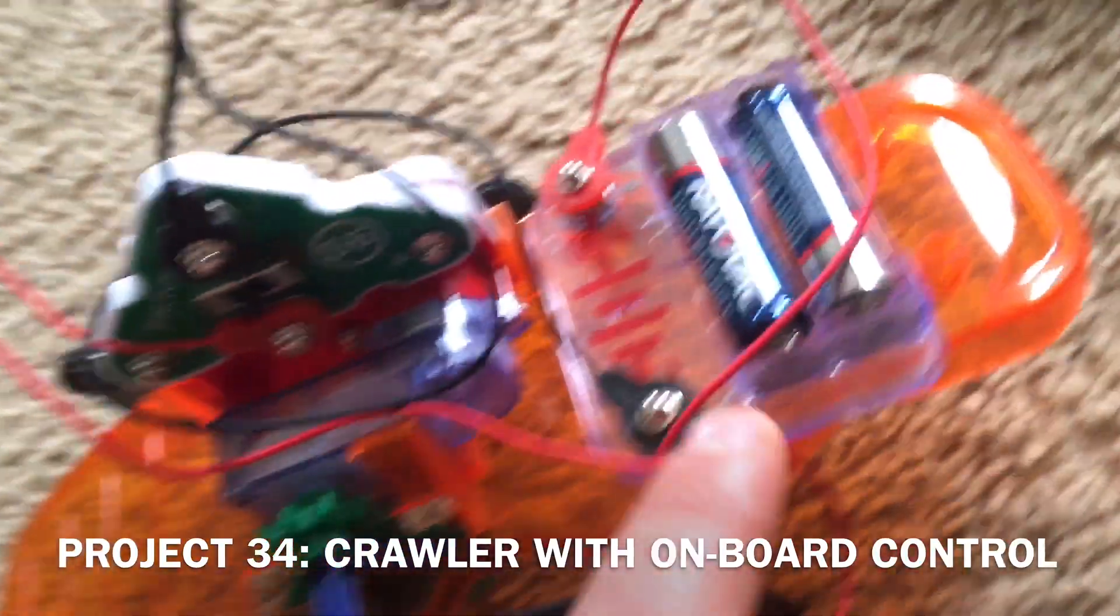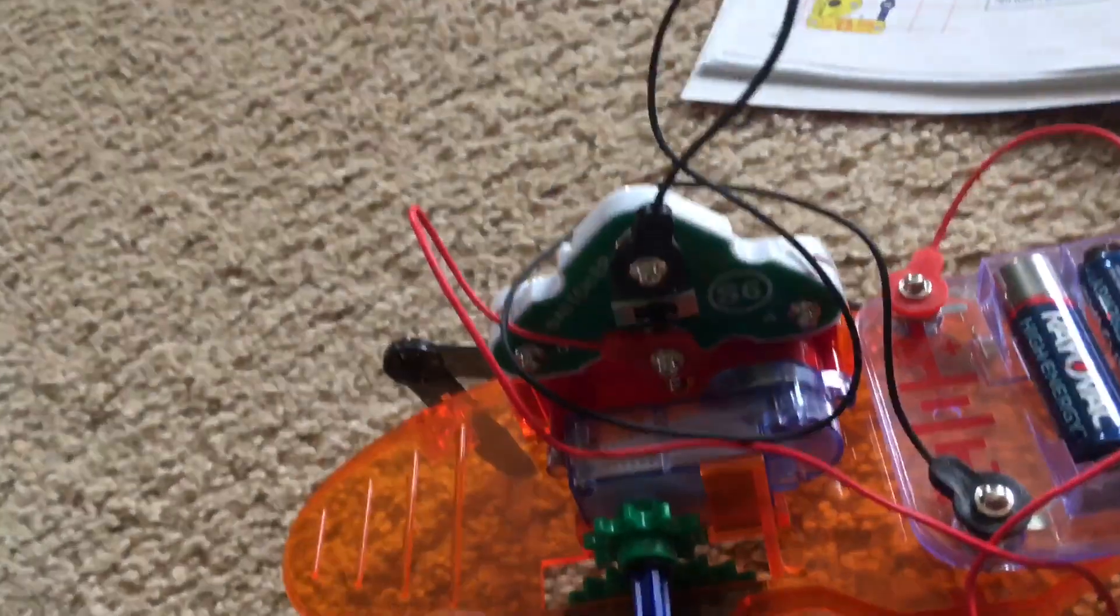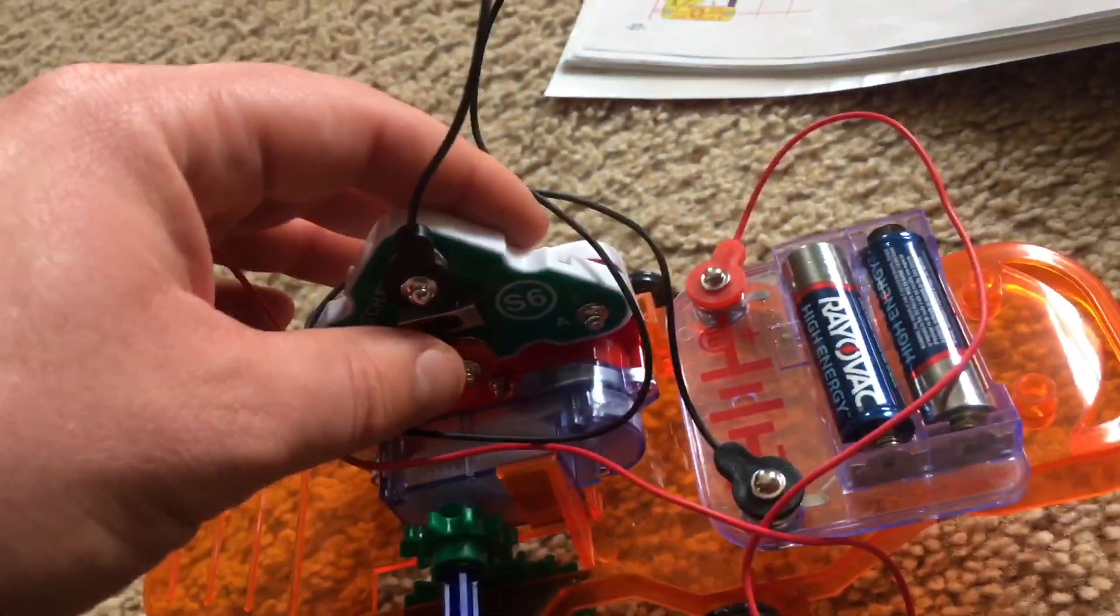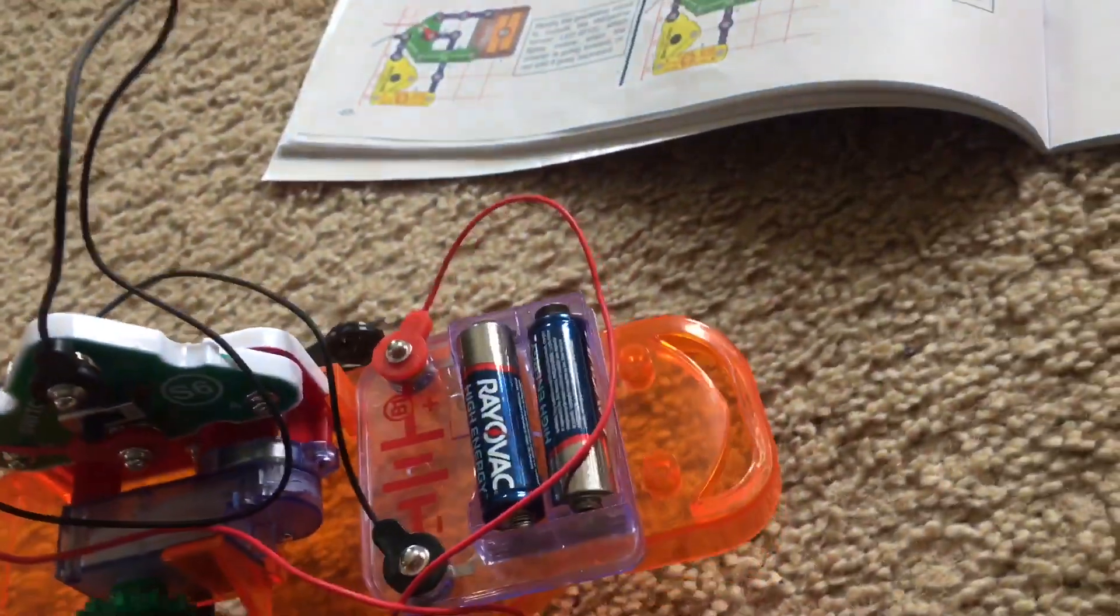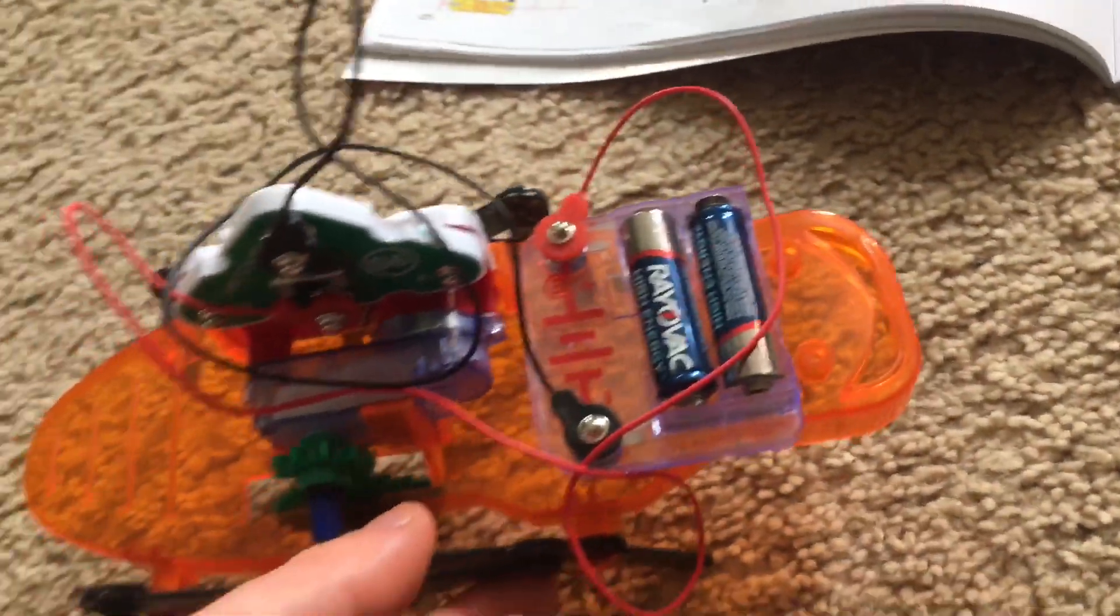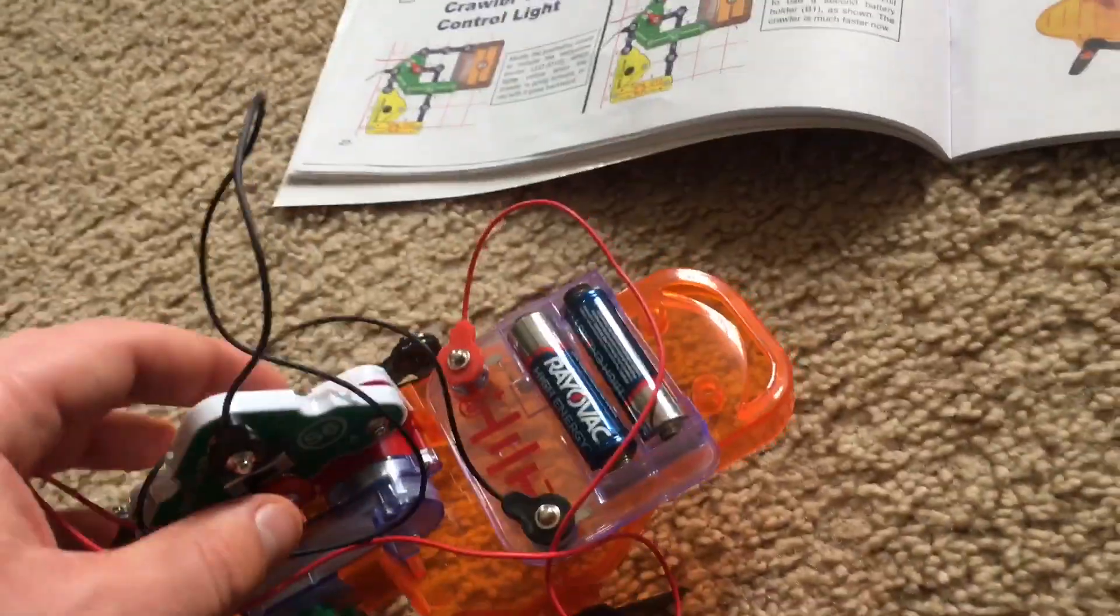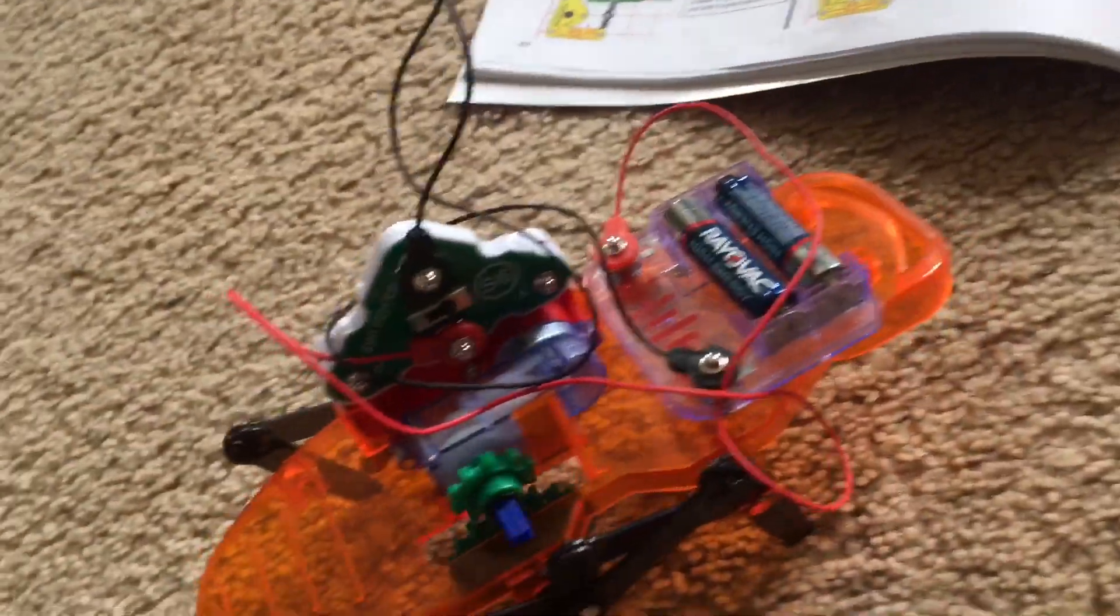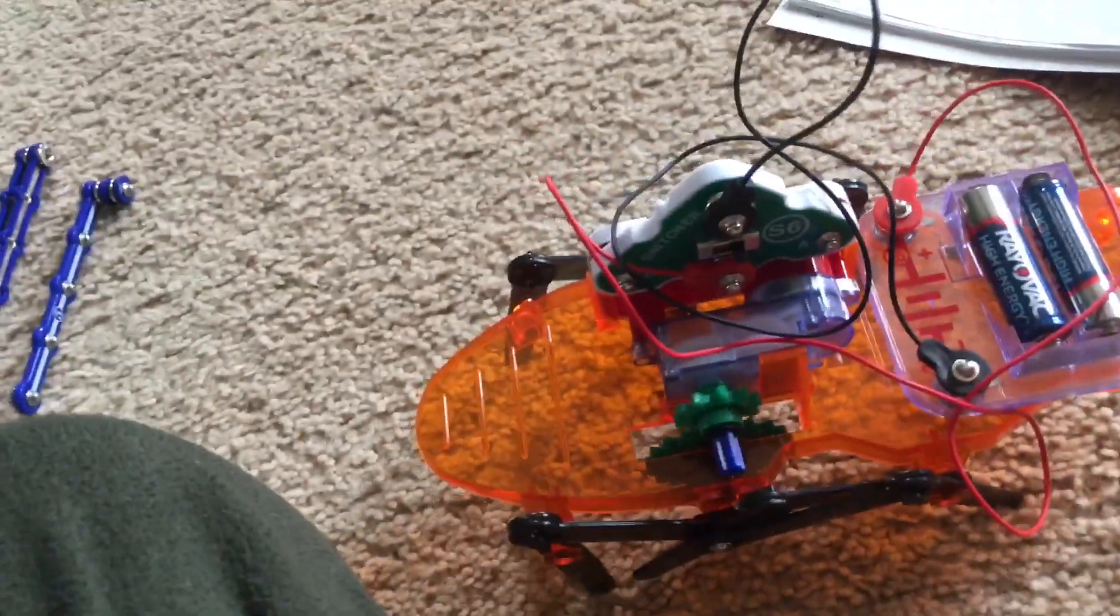I mounted a battery holder and the switcher on board the crawler attaching them to the motor so that I can now control it from the crawler itself. Moving the switch to the left makes the crawler go forward. Now it does not work as well on carpet as it would on a hard surface like a wooden floor, but when I move the slide switch switcher to the right the crawler moves backwards.